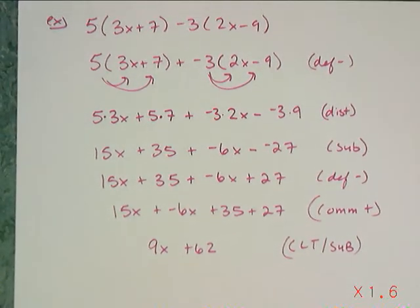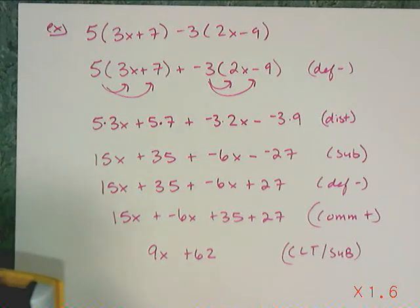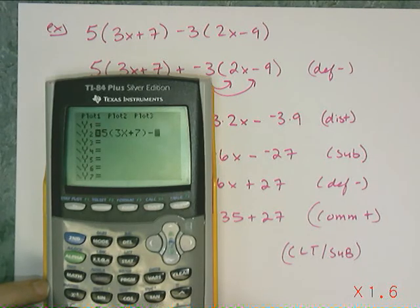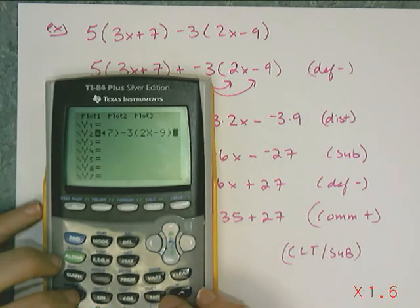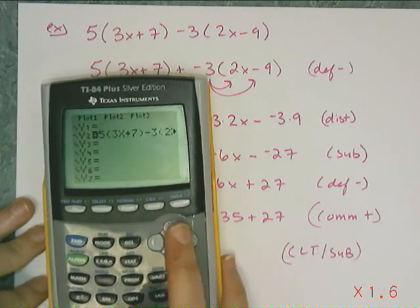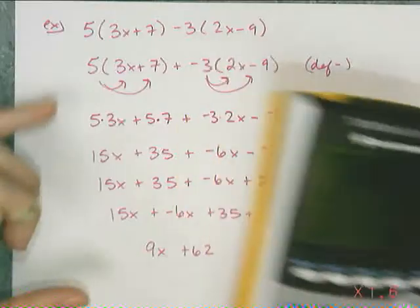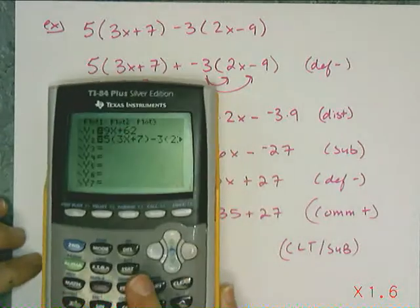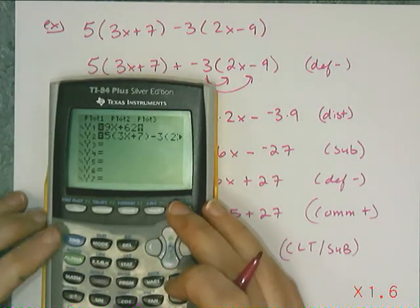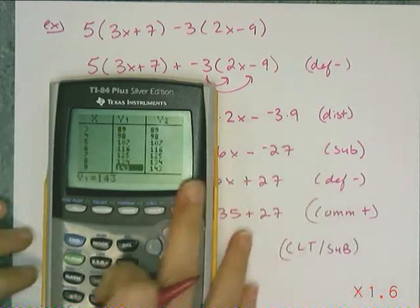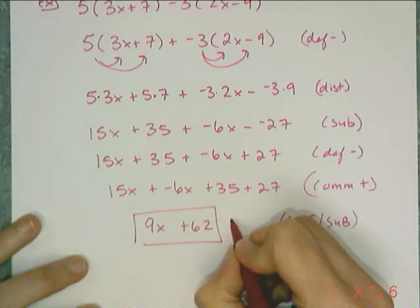Let's double check. I go to y equals and type in the original: 5 times (3x plus 7) minus 3 times (2x minus 9) as one equation, and my answer 9x plus 62 as the other. The table should be identical because these two expressions are equivalent — one is just the simpler version. If I go to the table and yes, the tables are identical. That means I simplified it correctly, so I can put my box around the answer.